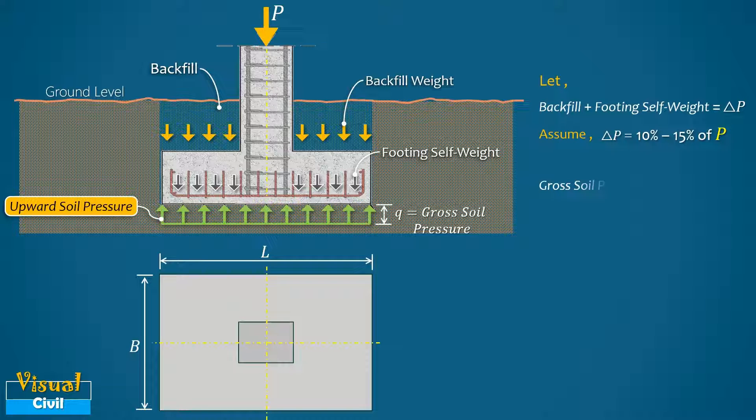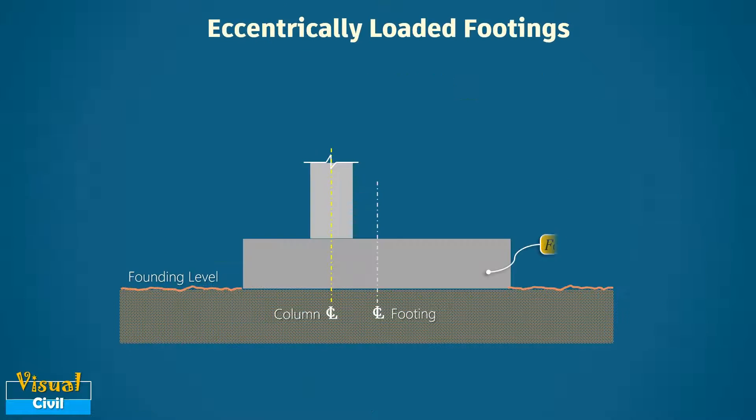Thus in a symmetrical loaded footing, the gross soil pressure is equal to P plus delta P divided by area of footing, and the minimum area required for the footing is equal to P plus delta P divided by allowable bearing capacity of soil. In eccentrically loaded footings, load transmitted from the column to footing acts eccentrically with respect to the centroid of the footing base.